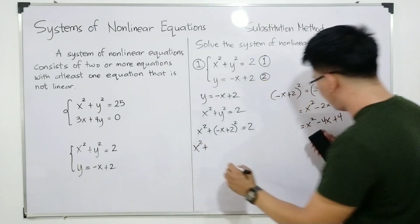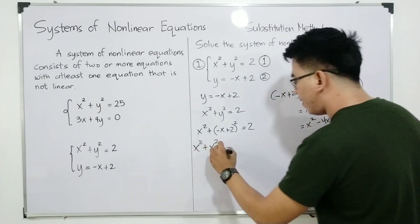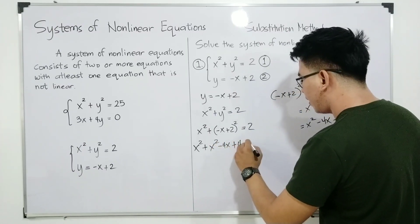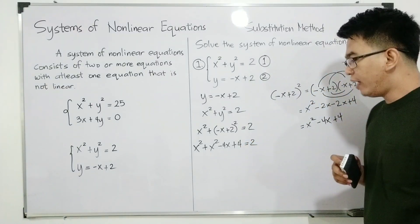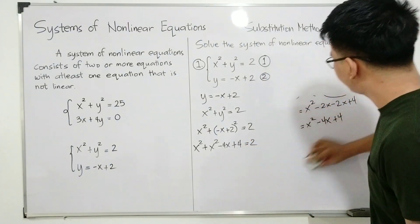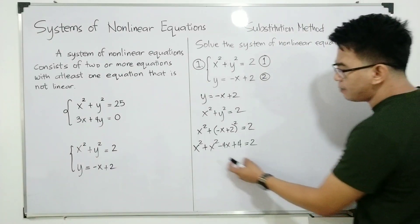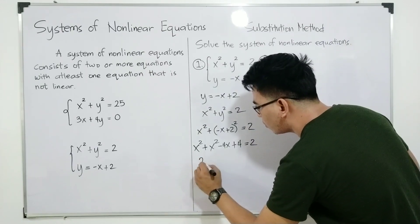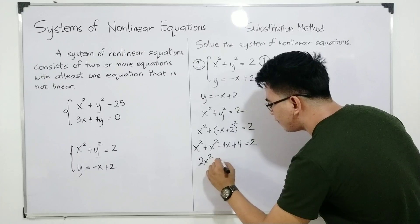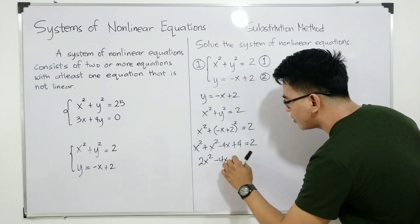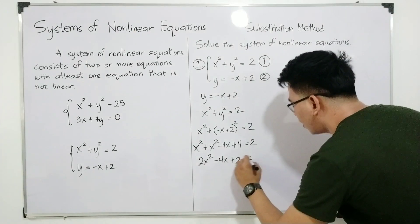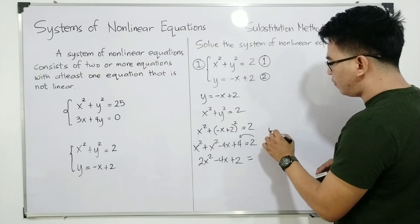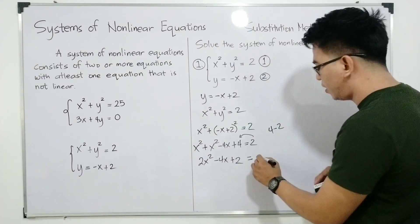So we can replace negative x plus 2 squared with that. Copy x squared plus x squared minus 4x plus 4 is equal to 2. We can simplify this: combining x squared plus x squared gives 2x squared minus 4x plus 4 is equal to 2. We transpose 2 to the other side: 4 minus 2 equals 2, giving us 2x squared minus 4x plus 2 is equal to 0.